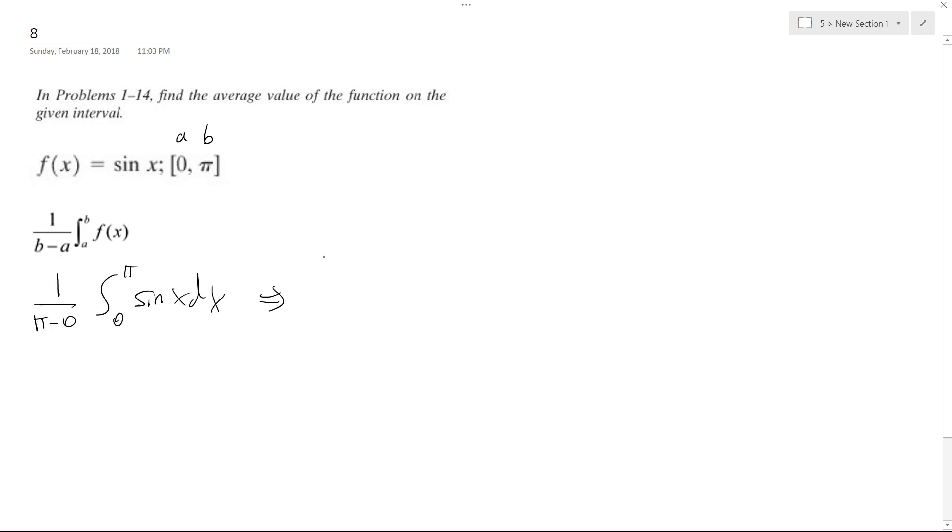So what we end up with is one over pi, and then the integration of sine is negative cosine of x, and we're going from zero to pi.